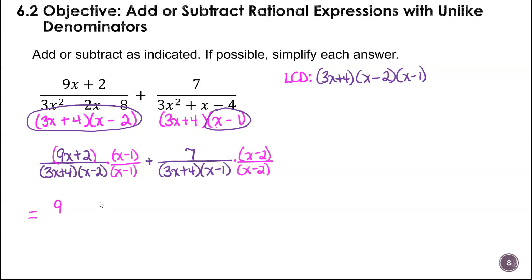That's going to be 9X squared minus 9X plus 2X minus 2 plus 7X minus 14. My common denominator is all three binomials, each unique one. Then I'm going to combine like terms and see if I can simplify this any further.